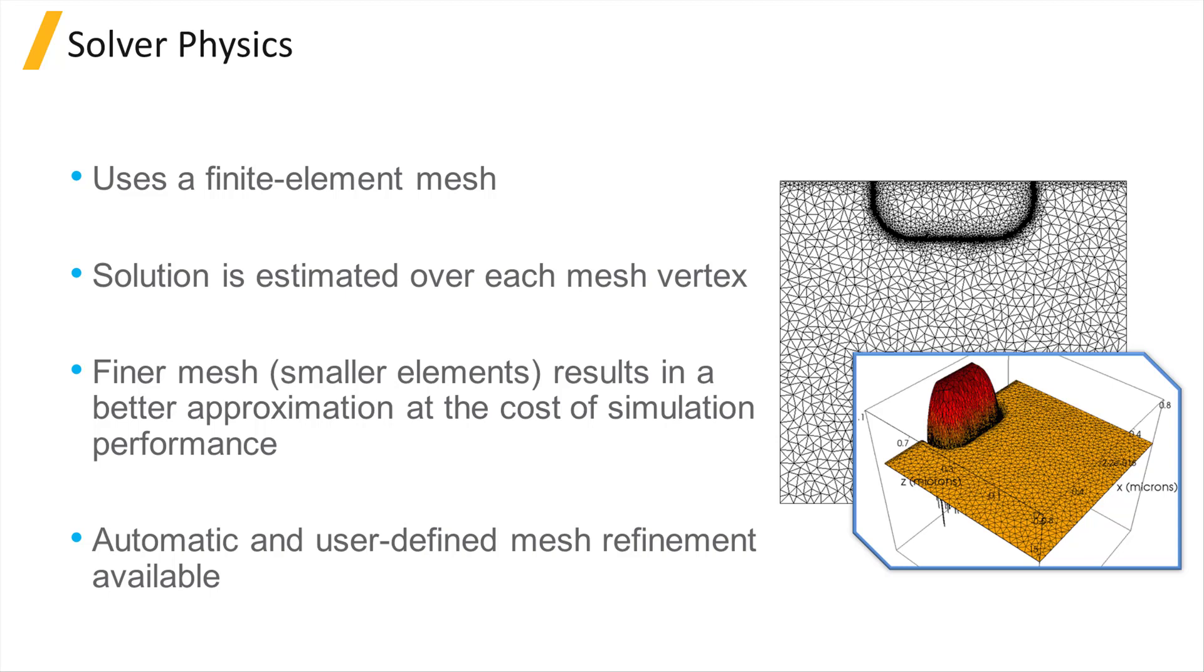You can see an example of automatic mesh refinement here around the boundaries where a sudden change in the value of a specific property is detected.